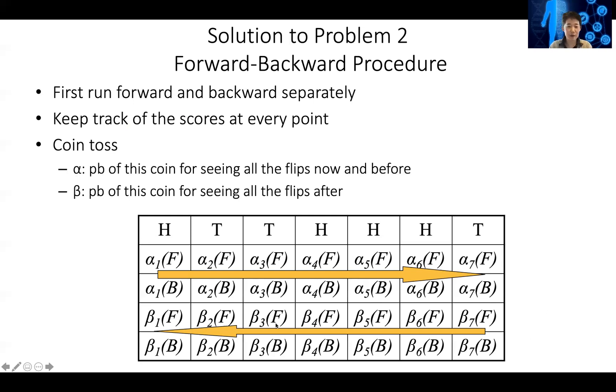The probability at this position of using a fair coin is basically alpha 3 times beta 3. Because if I'm using a fair coin, alpha 3 tells me if I use fair coin, I will see everything before. Beta 3 tells me if I use a fair coin, the probability of seeing everything after. Therefore, when you multiply these two numbers together, that's the probability.